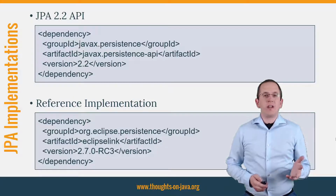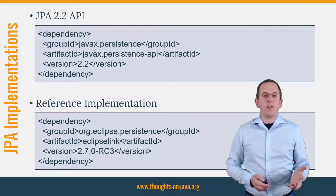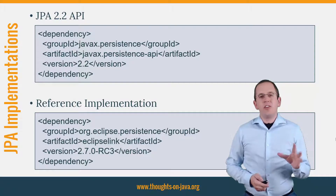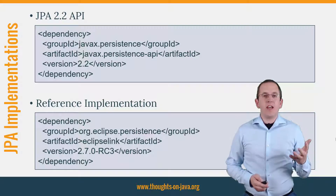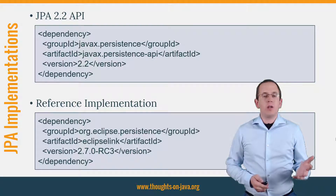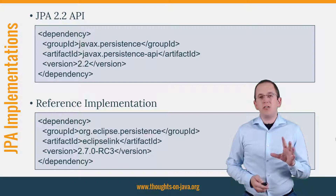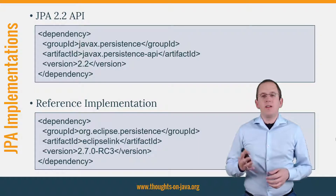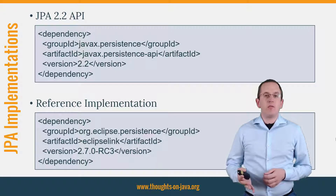Before we start, let's quickly talk about the dependencies you need to add to your project. The first Maven dependency here on the slide adds the API jar of the JPA 2.2 specification to your project. You can use it to implement your application, but you obviously need an implementation at runtime. You can use EclipseLink 2.7 or Hibernate 5.2.